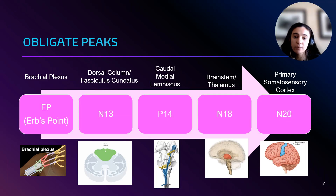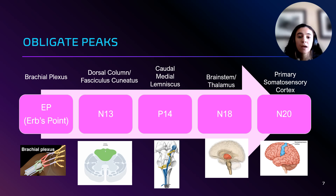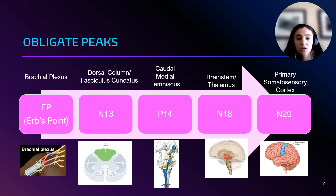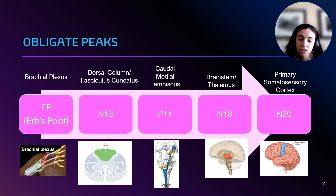For upper extremity SSEPs, the key obligate peaks seen at certain parts of the body include: EP's point, which reflects brachial plexus activity; N13, which represents the dorsal column and fasciculus cuneatus; P14, which originates from the caudal medial lemniscus; N18, which is related to brainstem and thalamic processing; and N20, which represents cortical activity in the primary somatosensory cortex. Any delays or absence of these peaks could indicate neural damage, which is important to recognize during surgery so we can alert the surgeon.